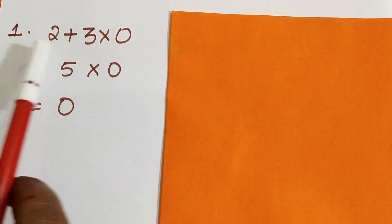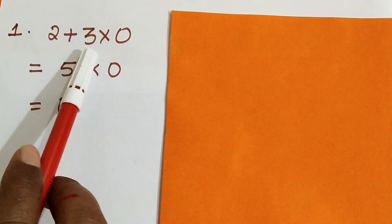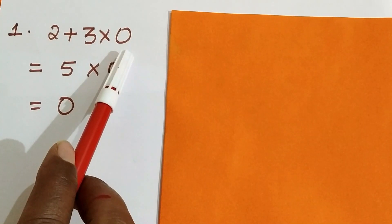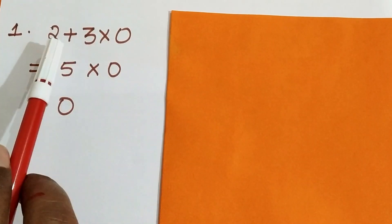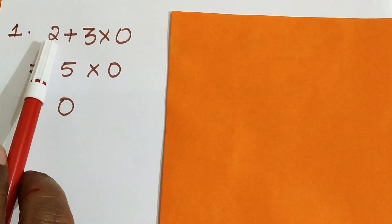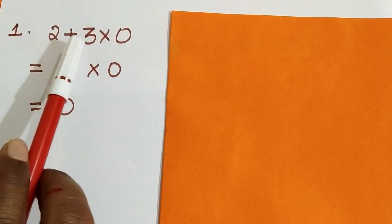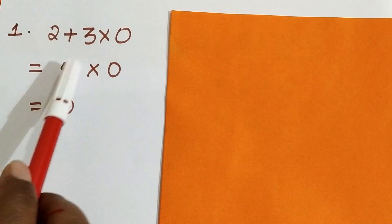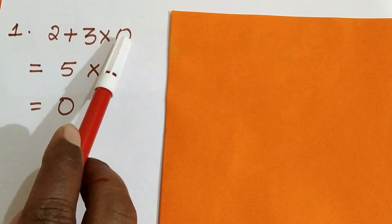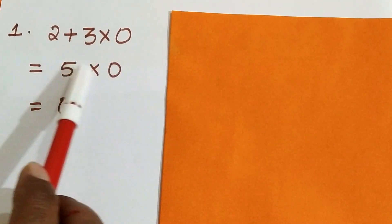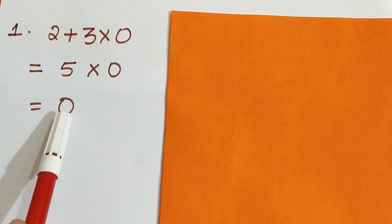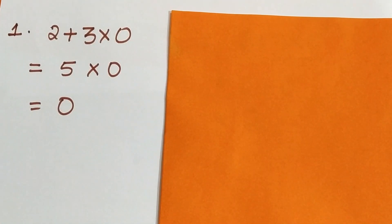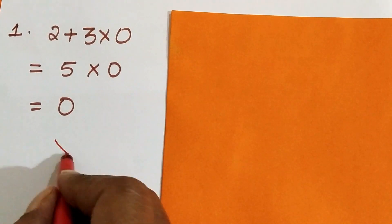First question: 2 plus 3 into 0. What usually students do is they will add 2 plus 3, which is 5, into 0. 5 into 0 is 0, but it is a wrong procedure.